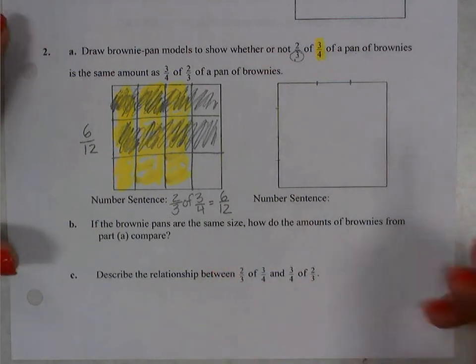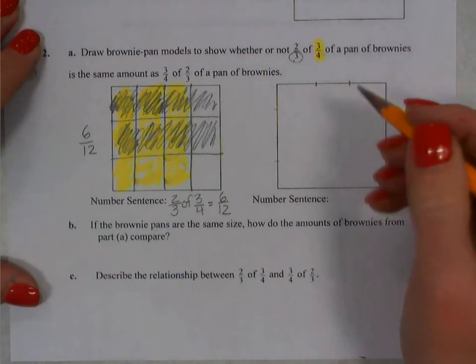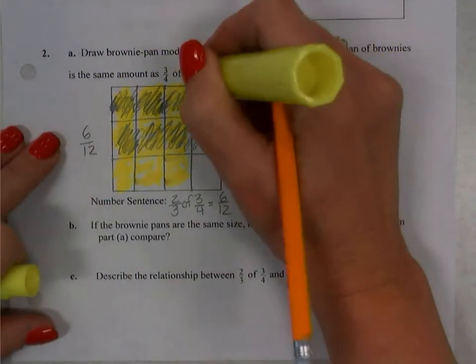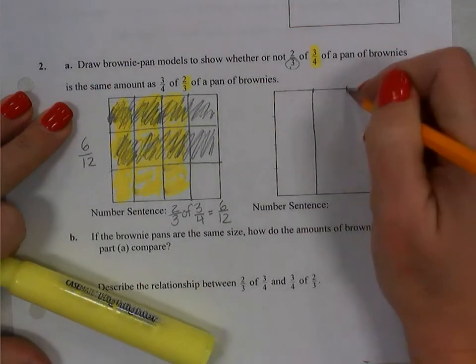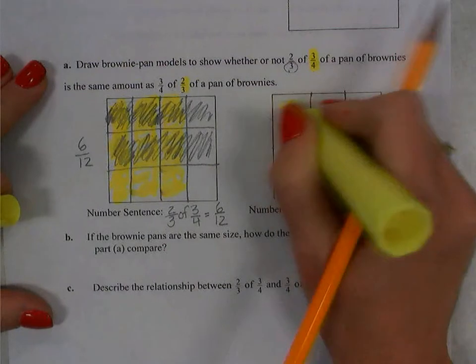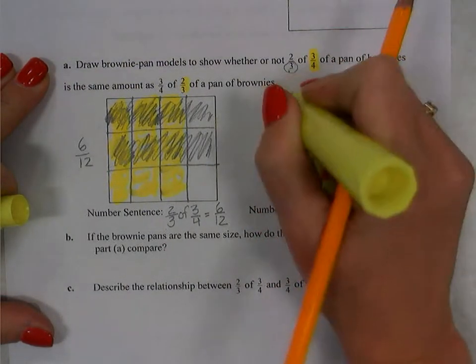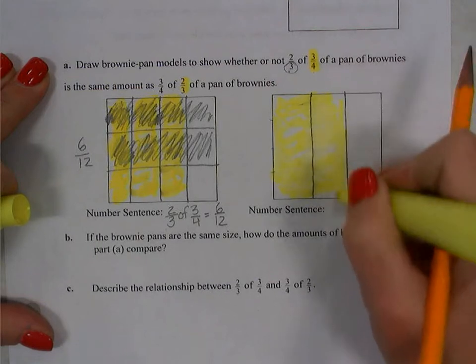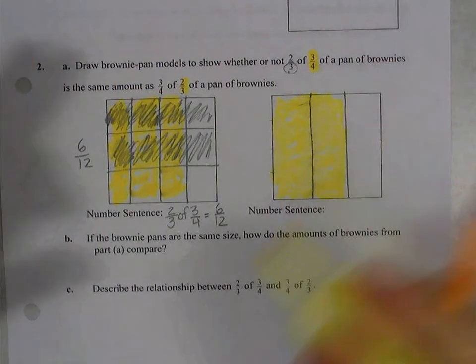Now let's look at this next one, which is three-fourths of two-thirds. So in this case, I have two-thirds of a pan of brownies. So I'm going to make three sections here, and I'm going to highlight two of them. So when I walk up to the counter to get my brownies, some of the brownies are already gone, but there's two-thirds left,